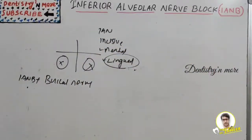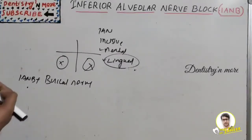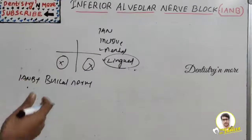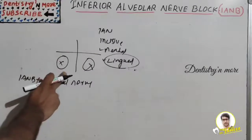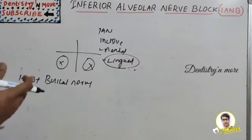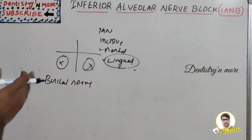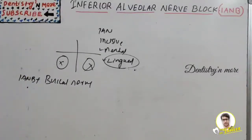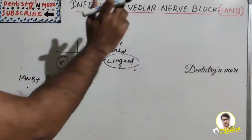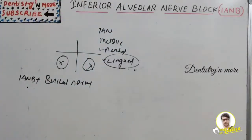The indications of IANB include: procedures on multiple mandibular teeth in one quadrant, when buccal soft tissue anesthesia anterior to the first molar is necessary, or when lingual soft tissue anesthesia is necessary. In all these cases we can opt for IANB.